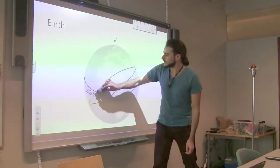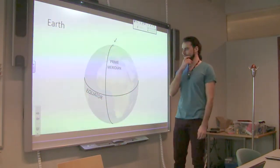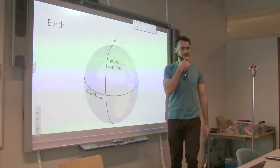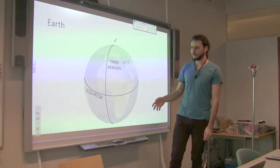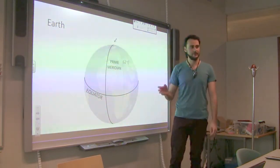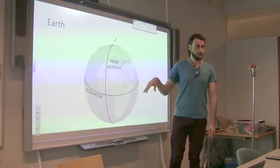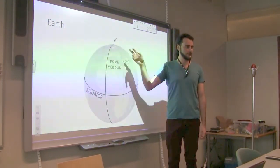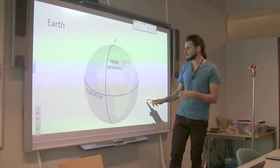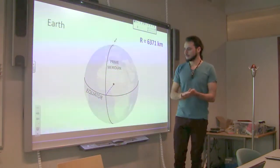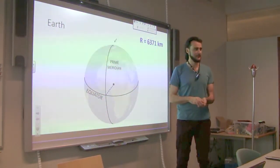The vertical lines are called meridians, and the most important one is called the prime meridian — you know it's important because it has the word 'prime' in it. The others are counted in degrees in the eastern or western direction. Unlike latitude bands, all meridians meet at the poles — it looks like the way you slice an orange. The radius of the Earth is approximately that number shown.